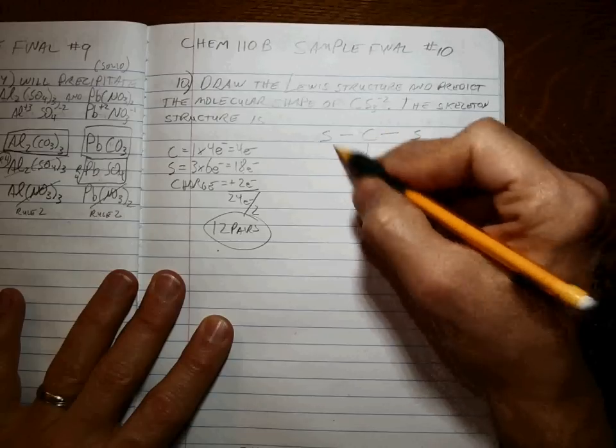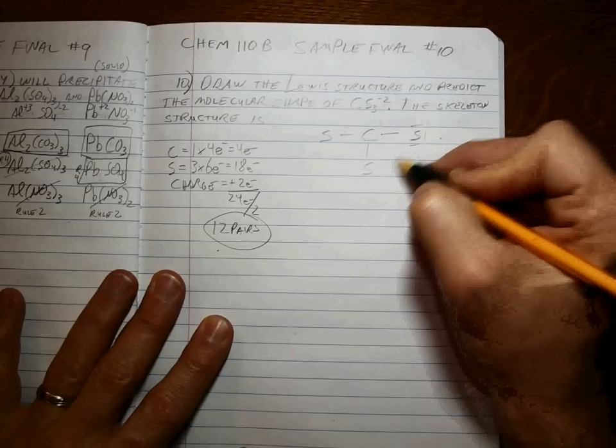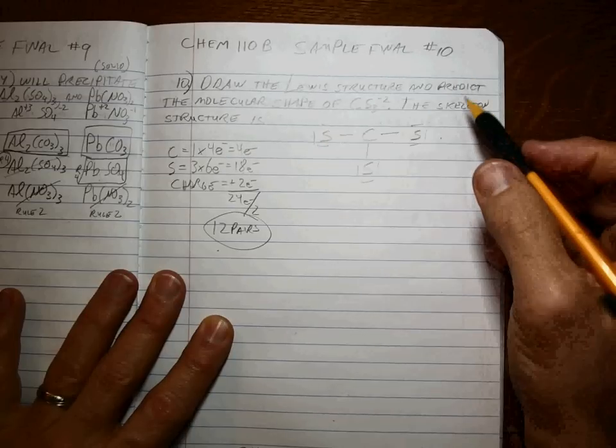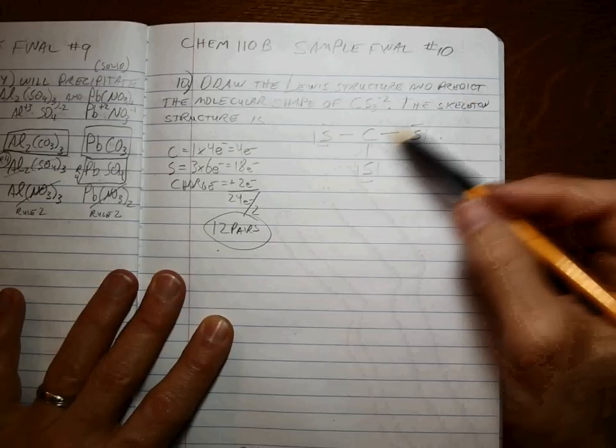Single bonds between the center and the outer atoms. Make the outer atoms happy by giving them a total of 8. We've used up 12 already, right?